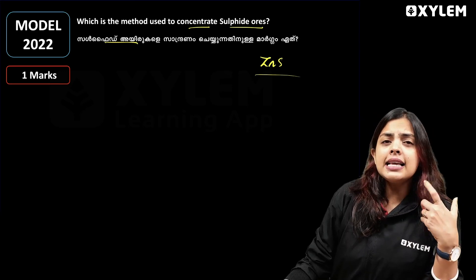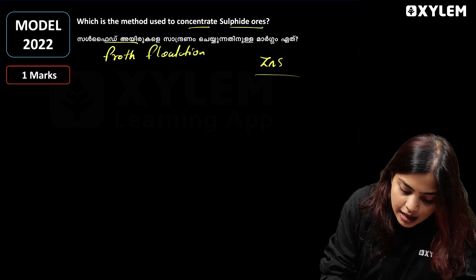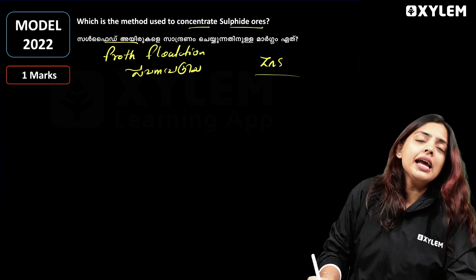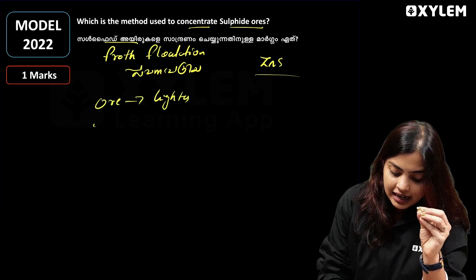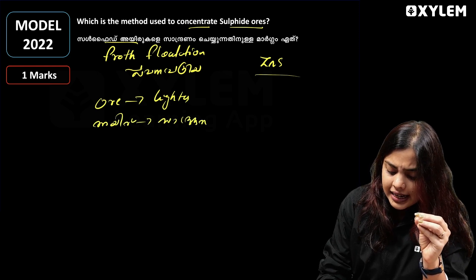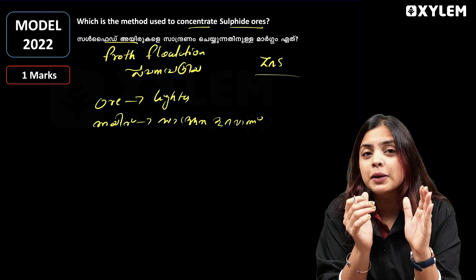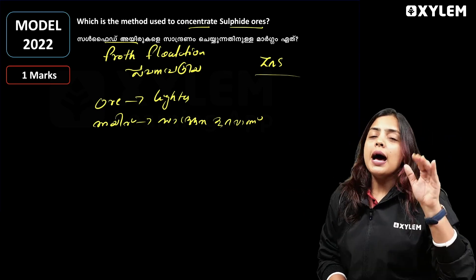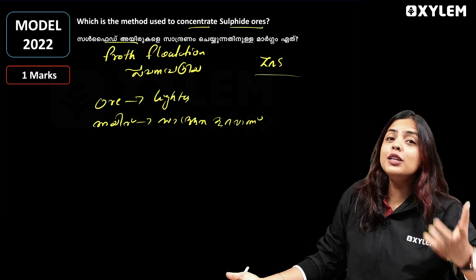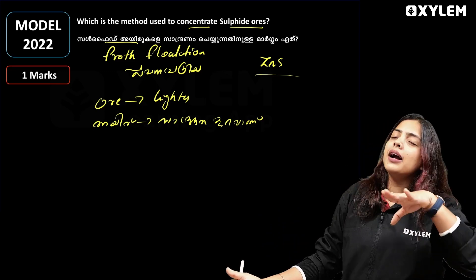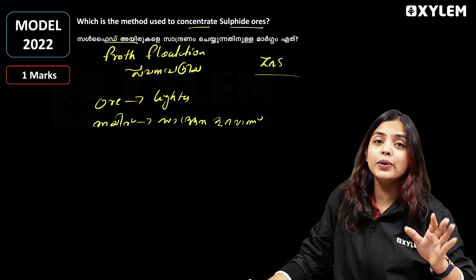How do we get froth flotation? Froth flotation separates ore particles. The ore particle is lighter, and the impurities settle. We use froth flotation to separate the metal based on density — the metal particles are heavier and the impurities are lighter.